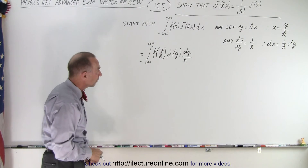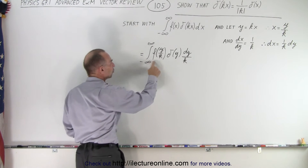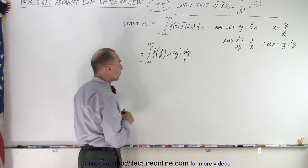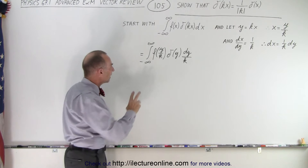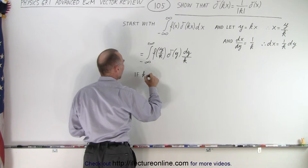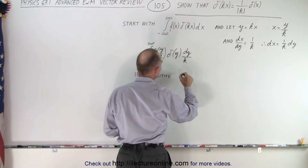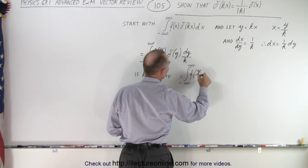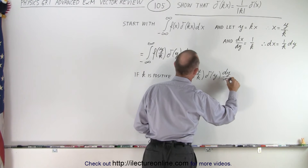We have one concern. We have a function of y over k. If k is a positive quantity, then no problem — we can simply go ahead and integrate. So if k is positive, this equals the integral from minus infinity to infinity of f(y/k) times delta of y times dy over k. The k comes out of the integral sign.